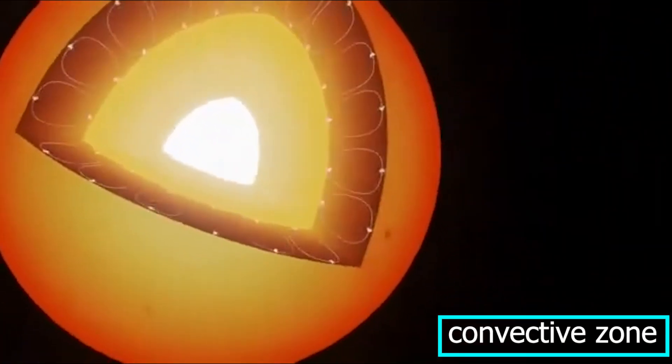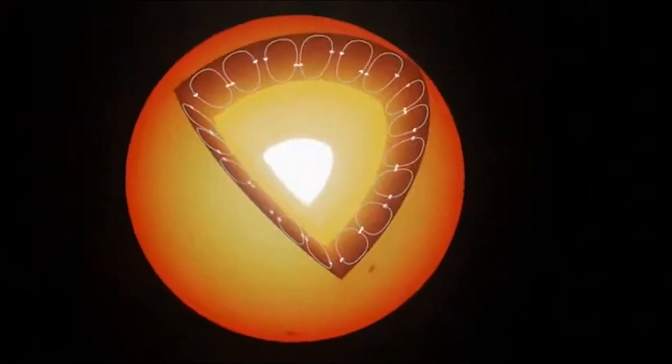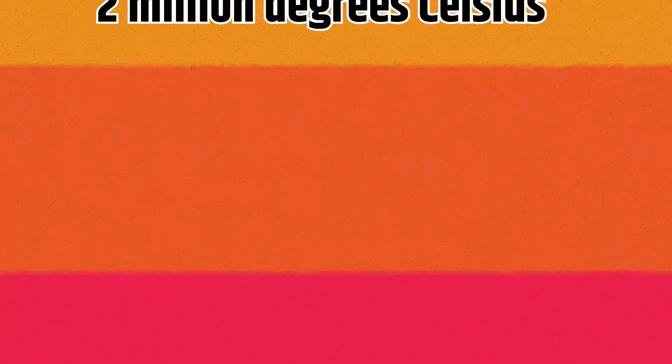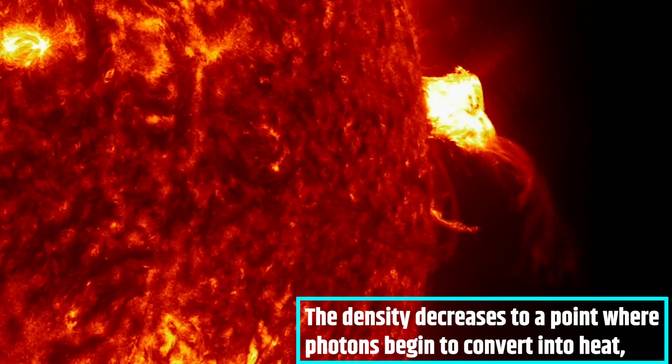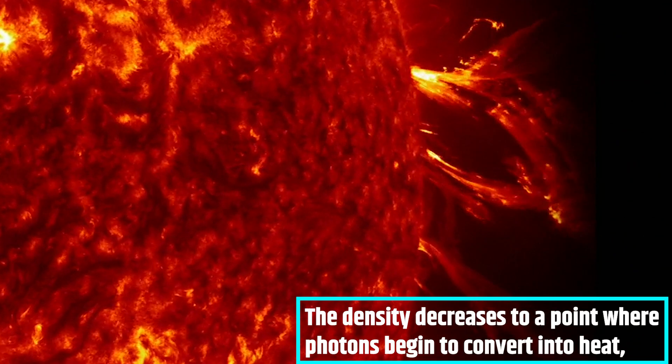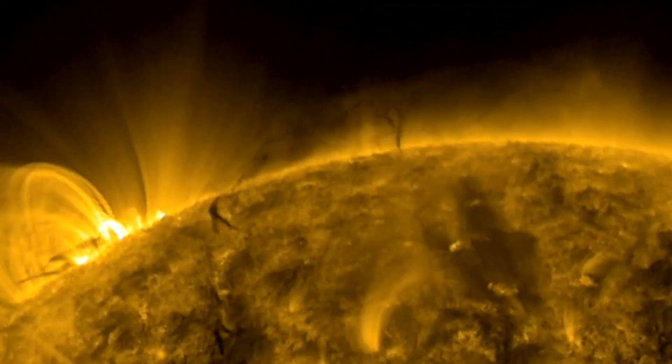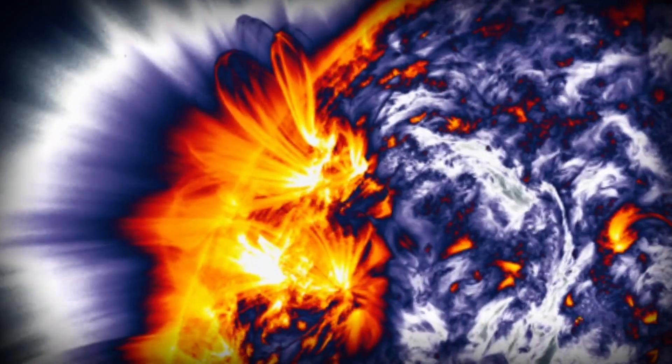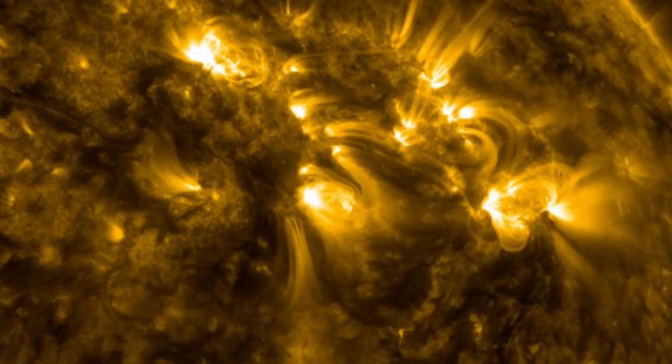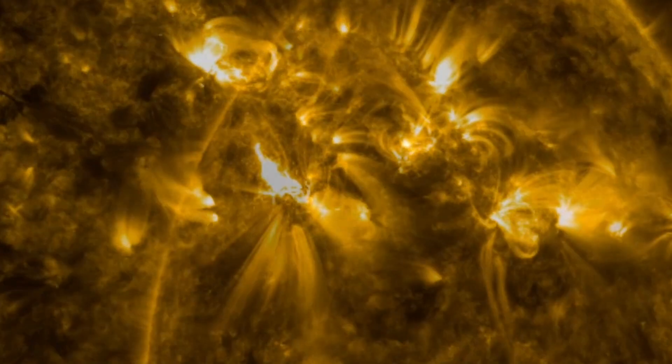Now, if we talk about the next layer, the convective zone, the temperature drops to as low as 2 million degrees Celsius. The density decreases to a point where photons begin to convert into heat, and the conversion process begins. Through convective currents, these heated photons start to move outward. These currents are rising columns of hot gas that create a rolling motion, similar to how boiling water generates rolling columns.